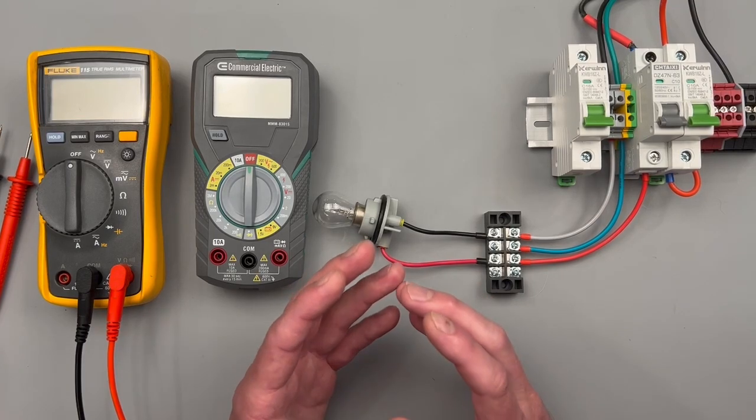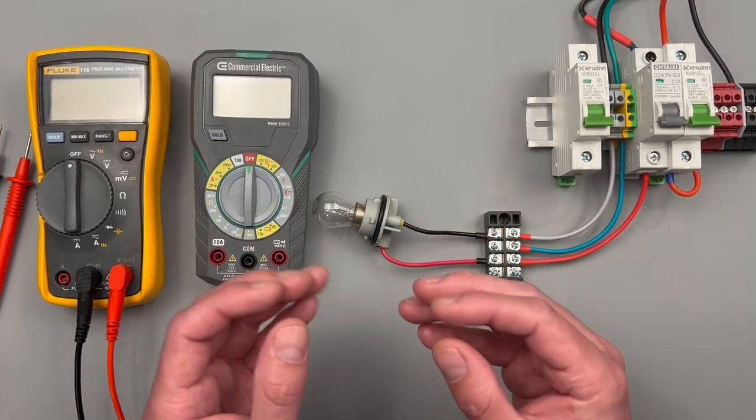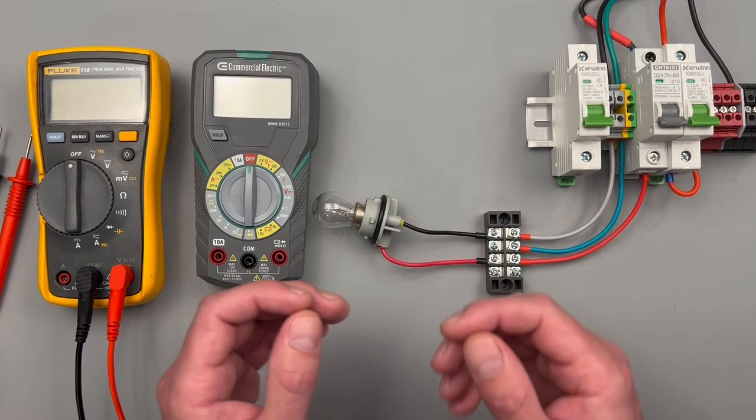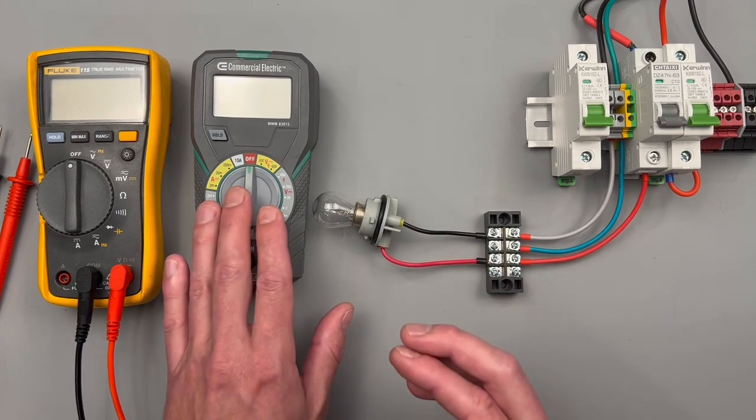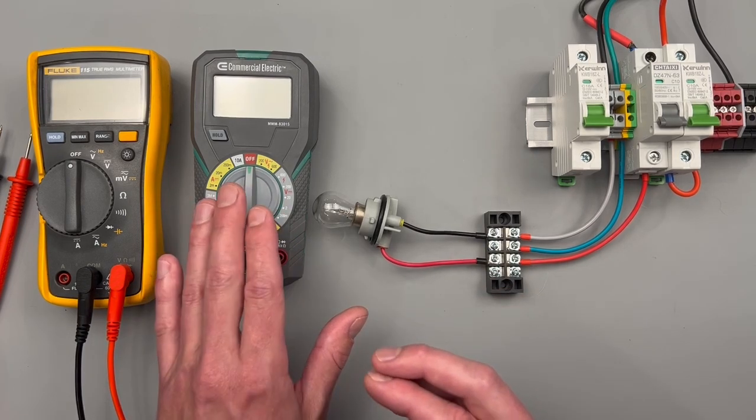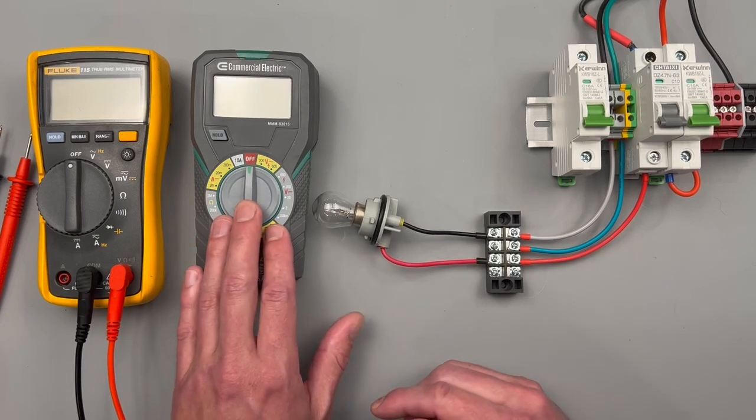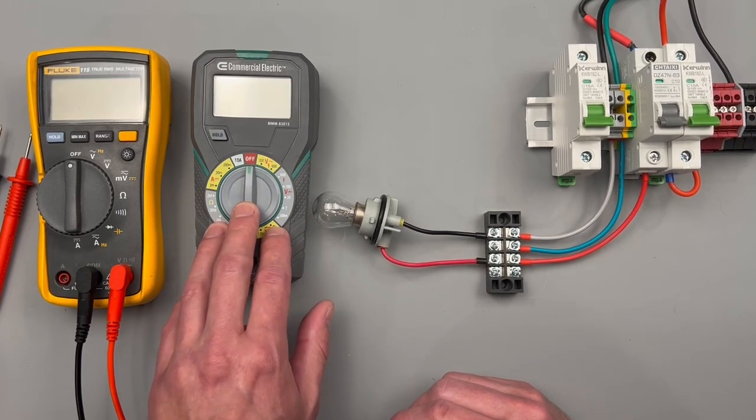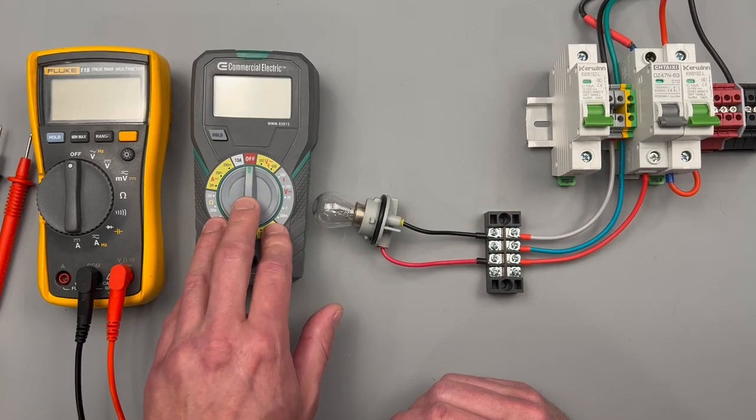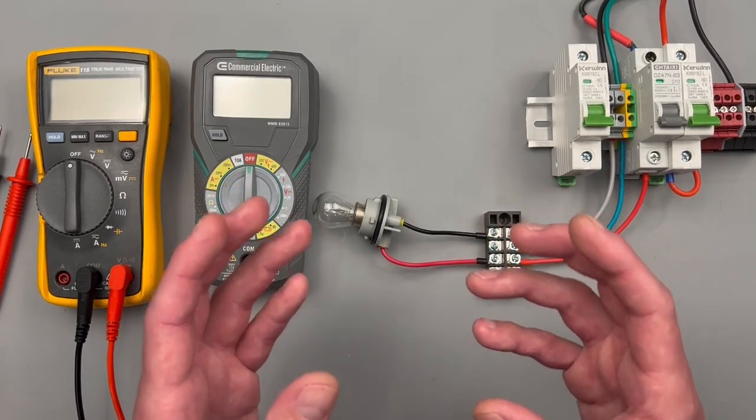All right, today we're going over how to measure alternating current voltage and amperage. Something to keep in mind: with more inexpensive meters, they probably won't have the option to measure AC amperage—they'll probably only be rated for DC amperage.